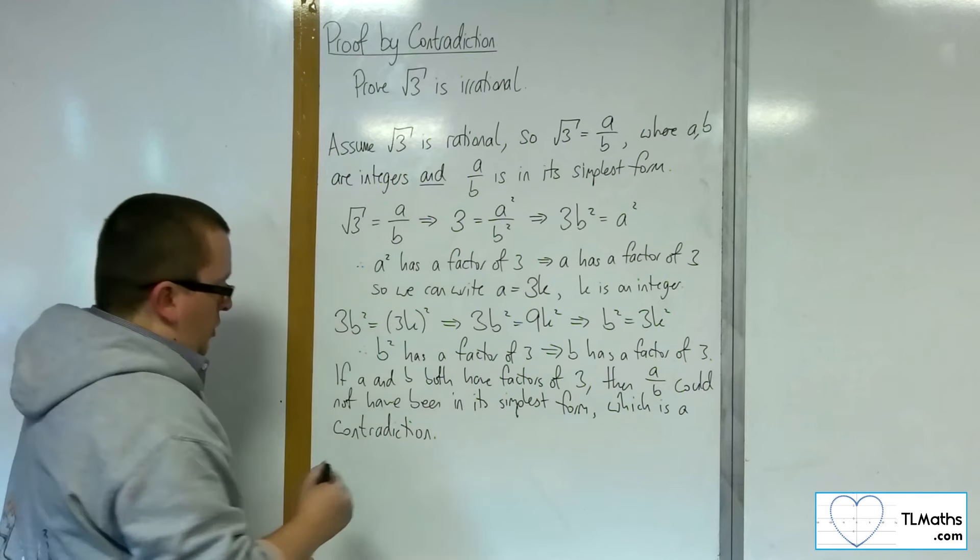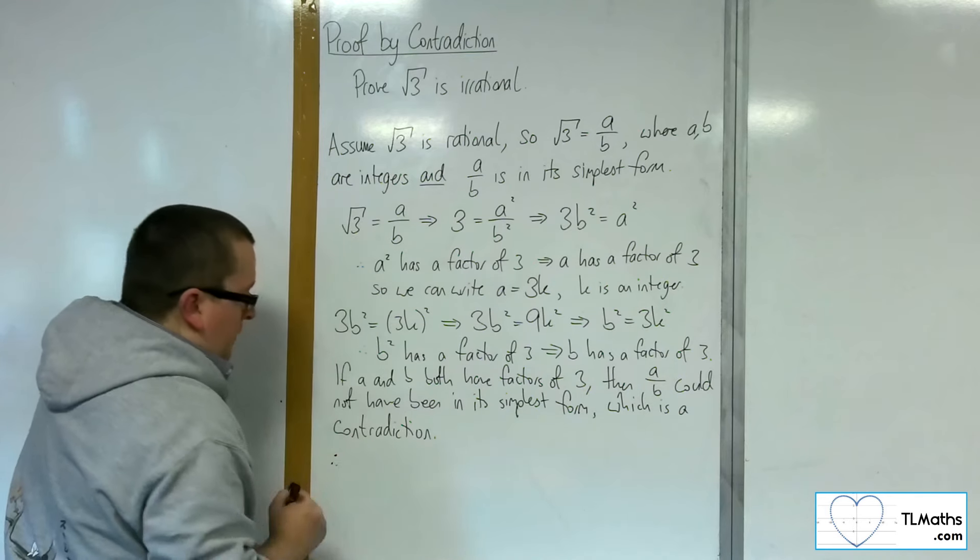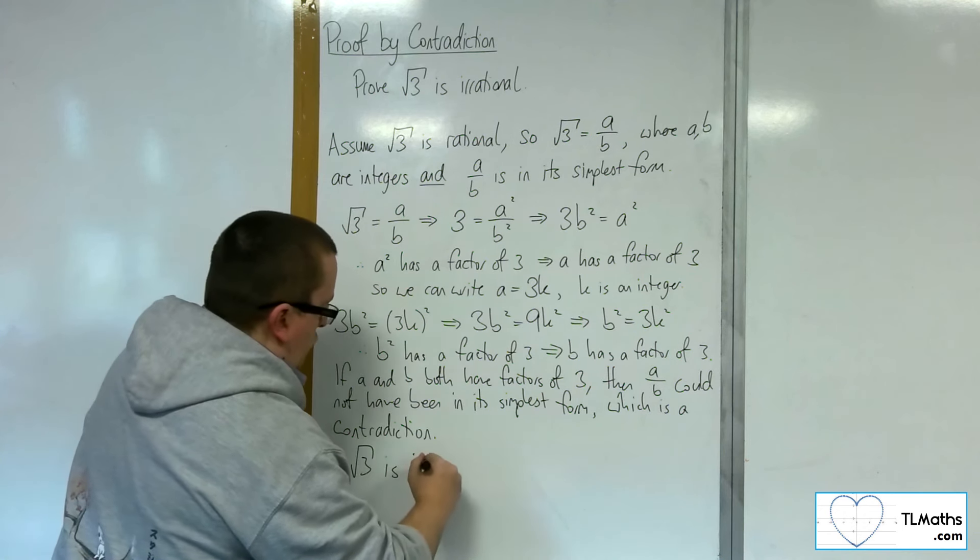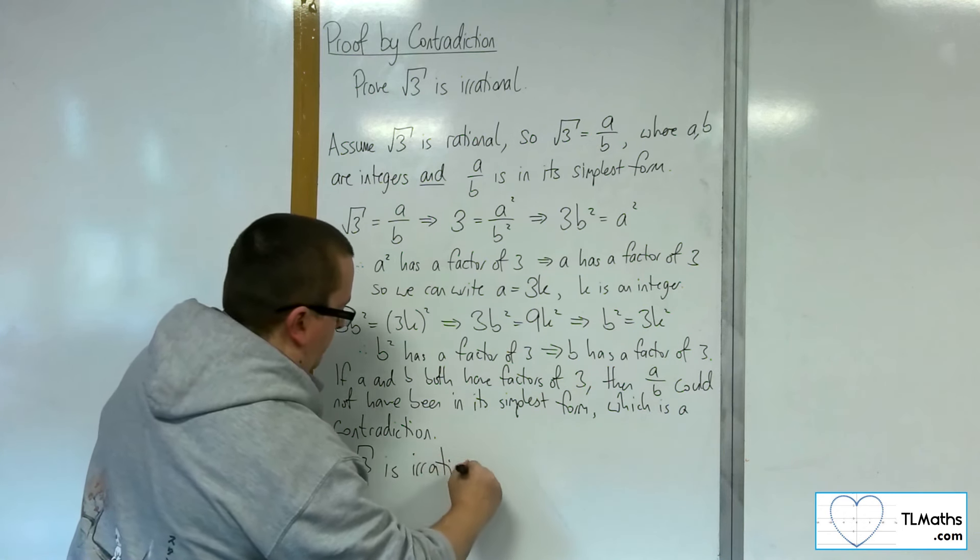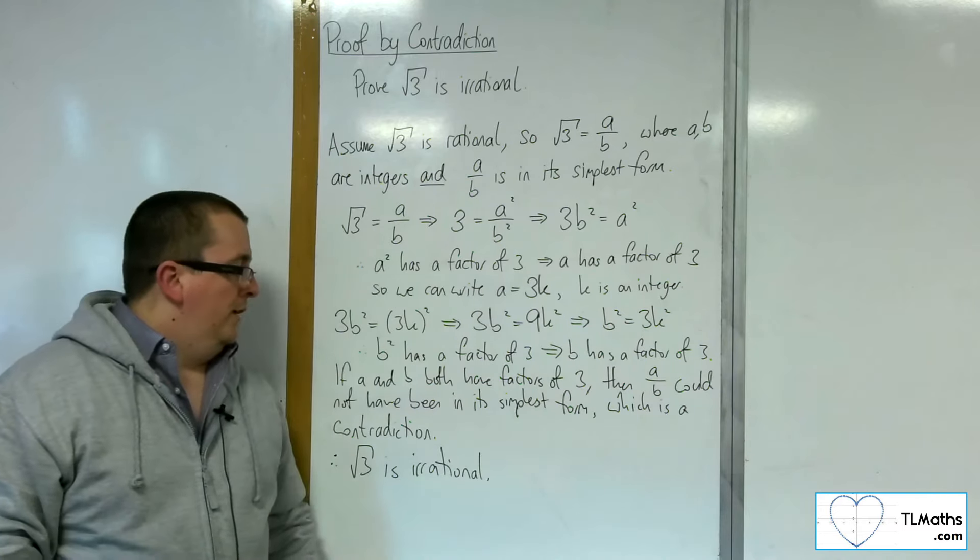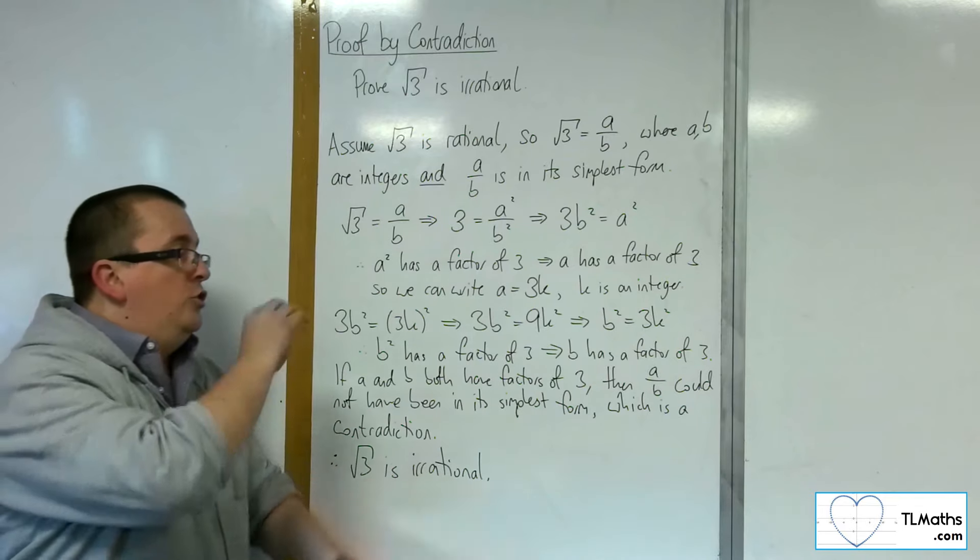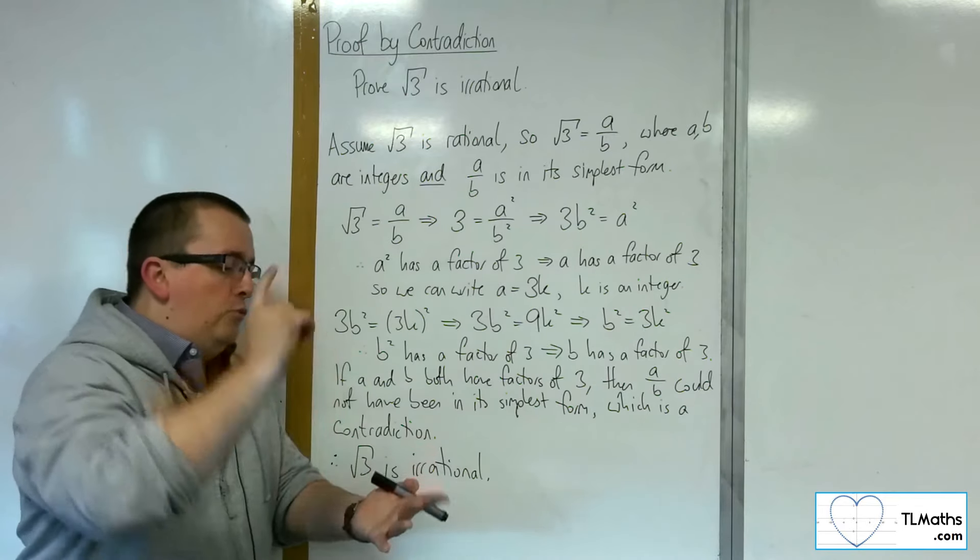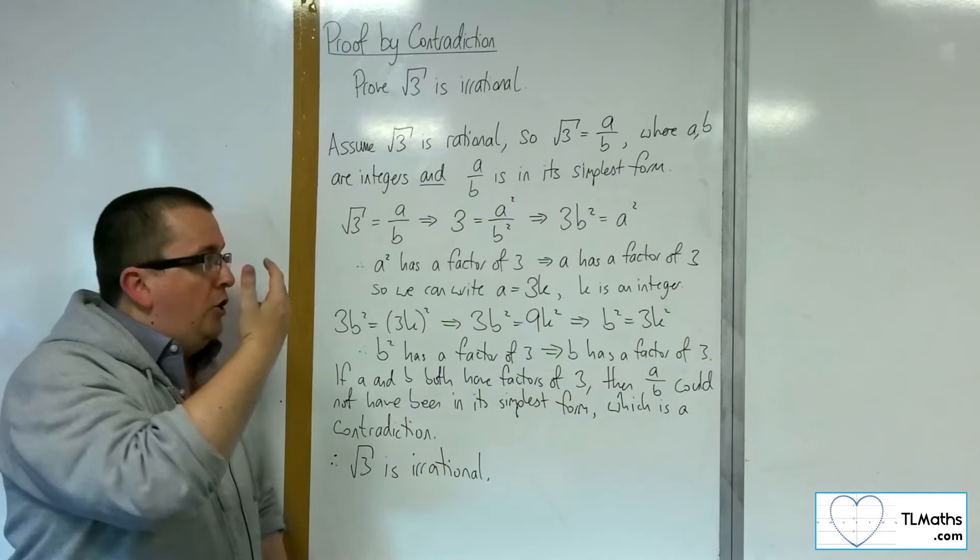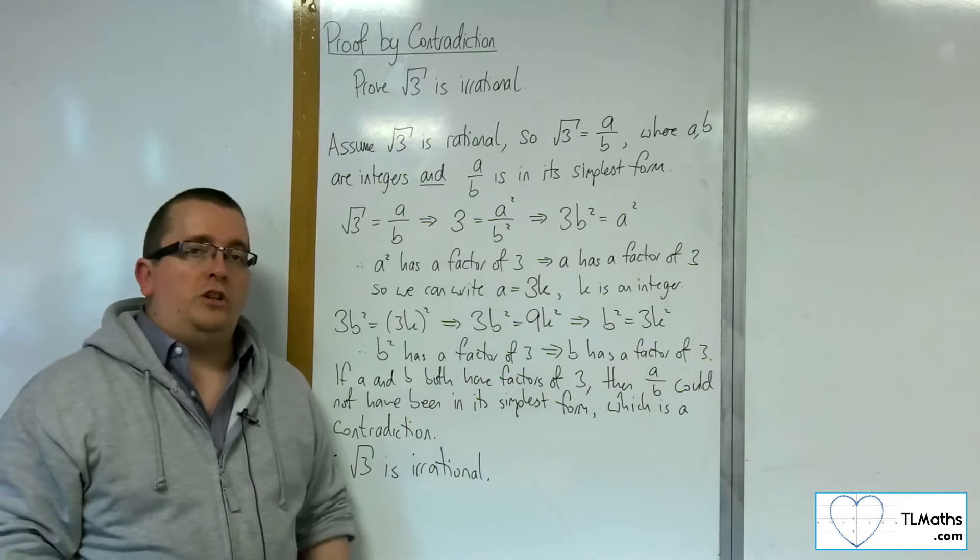So we identify the contradiction, and so therefore, root 3 is irrational. And that completes the proof that root 3 is irrational. And you can trade this up to root 5 is irrational, root 7 is irrational, etc. And you can use exactly the same structure to prove any of those.